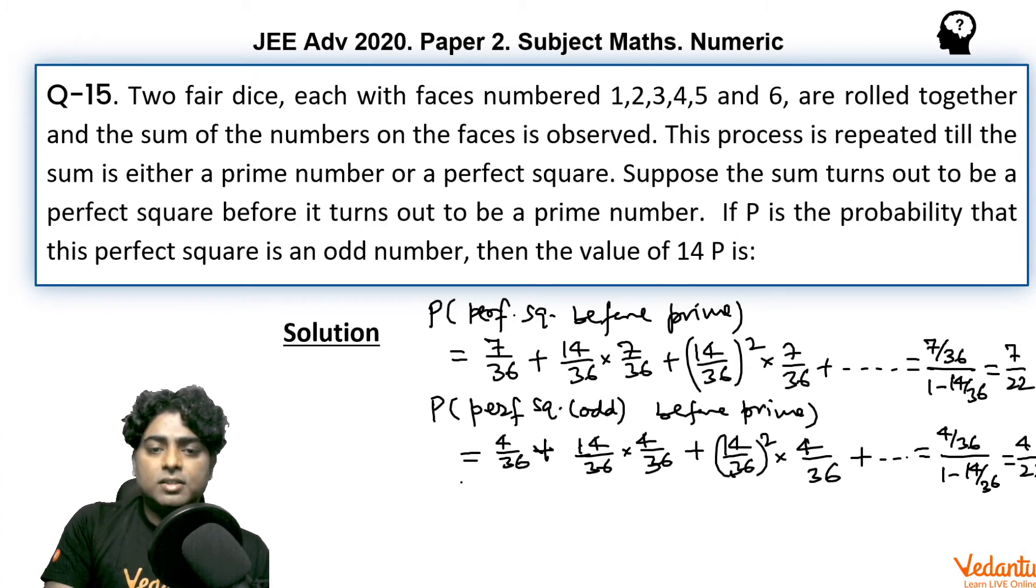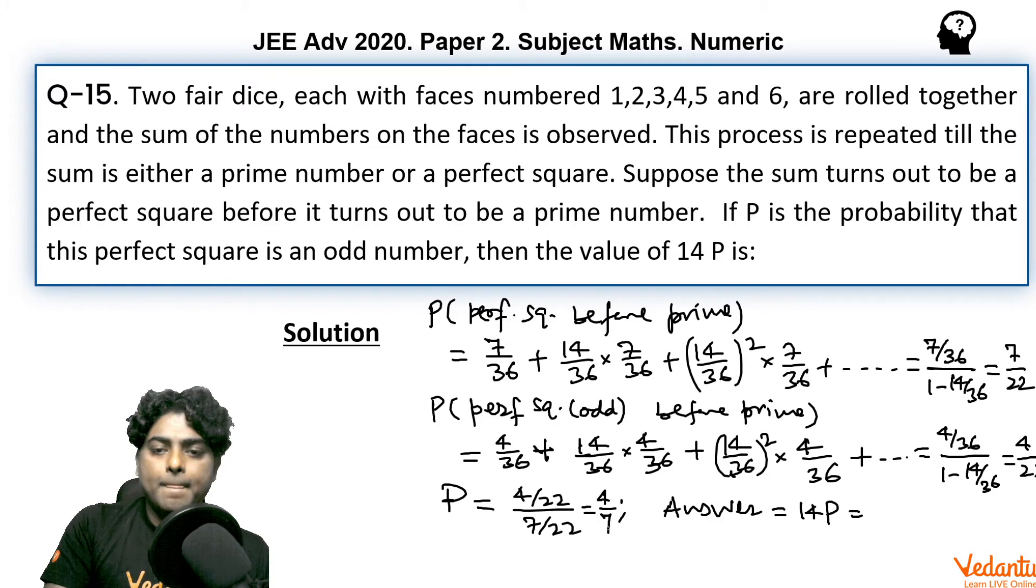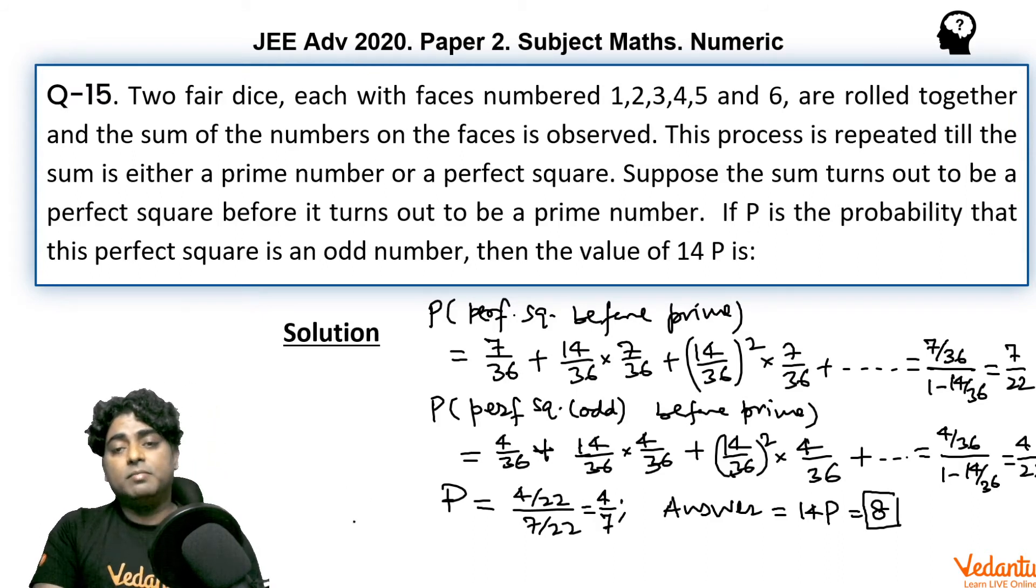Obviously, the answer for capital P is the ratio of these two, 4 upon 22 divided by 7 upon 22. It is very clear from the question. And the final answer to this problem, that is 14P would be, and here we are getting 4 by 7, would be 14 into 4 by 7, that is 8. So, 8 must be the final answer to this question. I hope you understood.